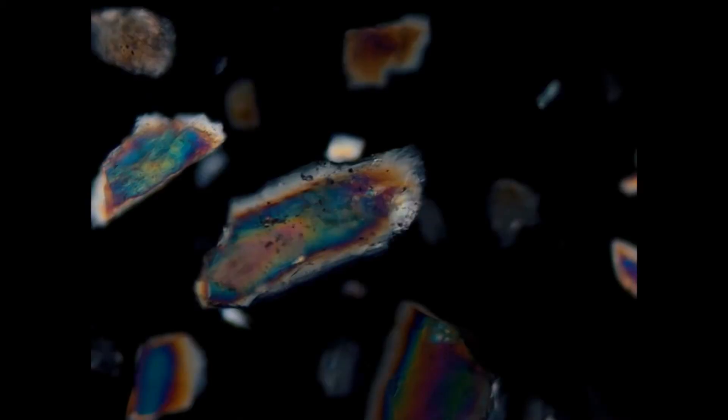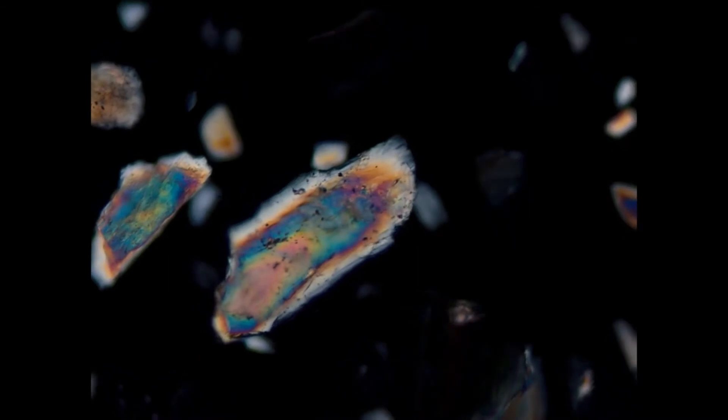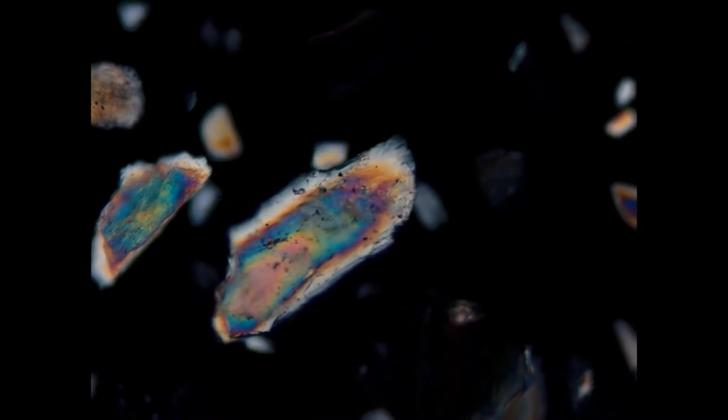If we look at the grain under cross-polarized light, we can see interference colors of the first and second order, depending on the thickness.